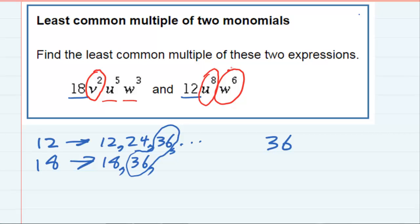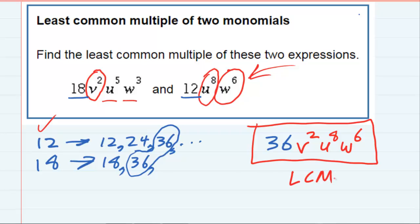So if I include those, I will have v², u⁸, and w⁶. So we've got two different processes there, one for the numerical part and a separate process for the variables, but just putting those two results together gives us our LCM.